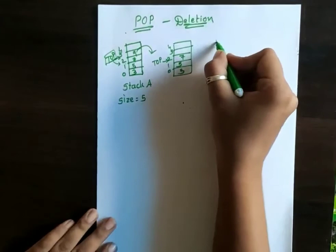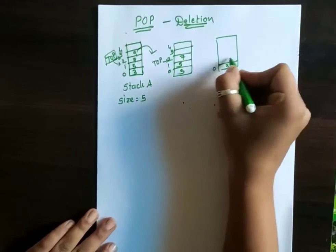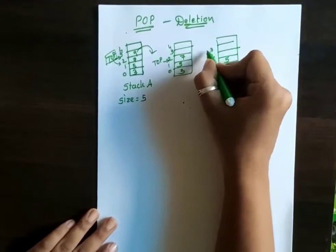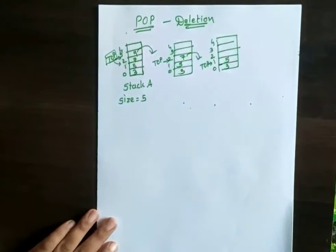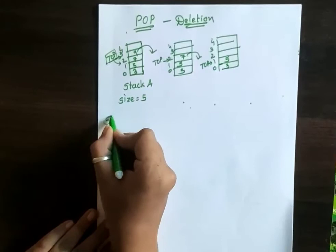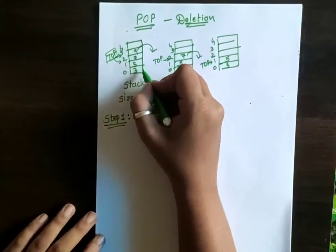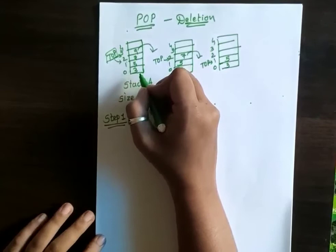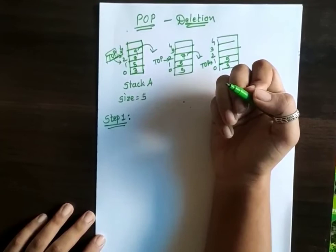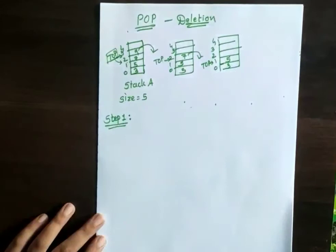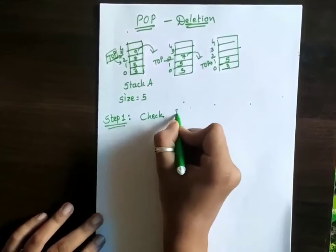Then if I remove one more element — 3, 5, then 7 — if I remove 7, then my top should point to index 1. So it is simple logic. For the pop algorithm, Step 1: here also I need to check something. As we checked for overflow in push operation, here assume that my stack is already empty. If my stack is already empty, I cannot delete anything — it will give some garbage value. So we need to check for underflow.